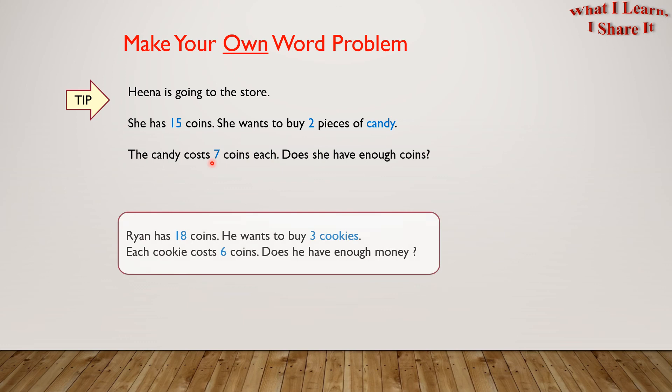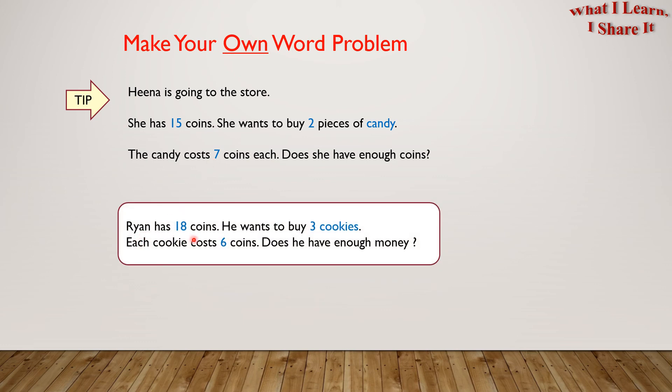Here is mine. Ryan has 18 coins. He wants to buy 3 cookies. Each cookie costs 6 coins. Does he have enough money?